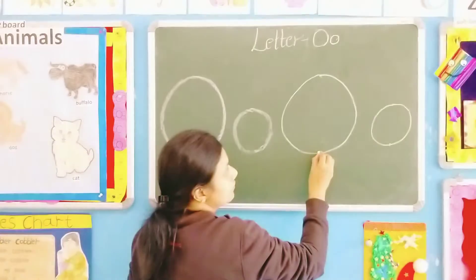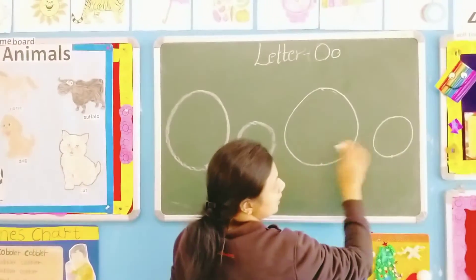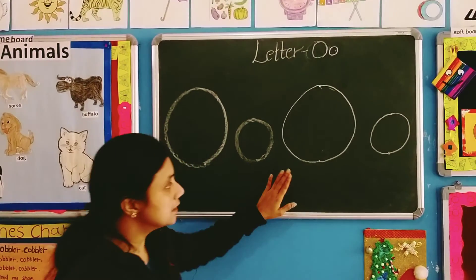See, when two dots are here, you have to join them by making the circle. See, capital O and small. They are very easy for you.